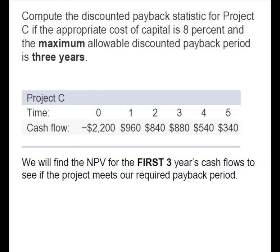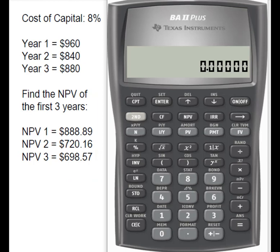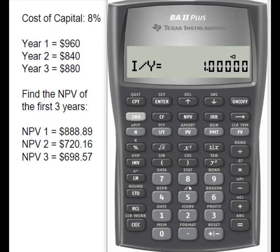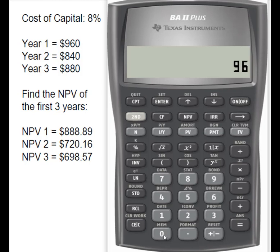So let's just do the first three years and see if we get paid back. We're simply going to use our time value of money keys, beginning with year one. For year one, N is one year, our cost of capital IY is 8%, we have no payment, and the future value is $960. Now we compute the present value, which gives us $888.89.